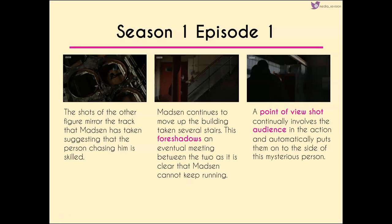Shots of the other figure mirror the same path Madsen has taken, suggesting the pursuer is really skilled and following in his footsteps. There are a lot of cut shots between the mysterious figure and Madsen as he moves up the building. We have foreshadowing that there's going to be an eventual meeting between the two, since Madsen can't keep running. A point-of-view shot then involves us — making us feel like we're behind Luther, part of his team, right from the start.